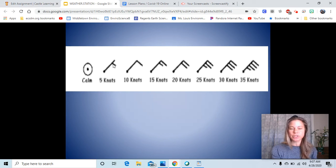Five knots, which is very low wind, you have a little half feather, a short feather. Ten knots is a long feather, and then you add those together as you go.